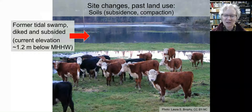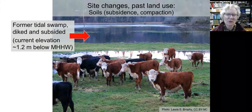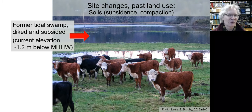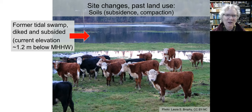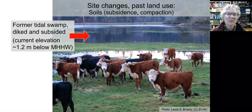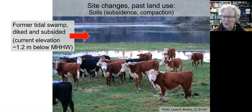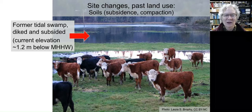First, on-site changes due to past land uses mean that it's often not possible to restore tidal swamps in their historical locations. Often the loss of soil organic matter, compaction from farm operations, and drainage have caused subsidence of the wetland surface, leaving the ground surface too low for trees to survive. This cattle pasture was once a Sitka spruce tidal swamp in the 1800s, but due to diking and subsidence it's now over a meter below mean higher high water. So we're unlikely to be successful restoring tidal swamp here, because tidal swamp is almost always found above mean higher high water.